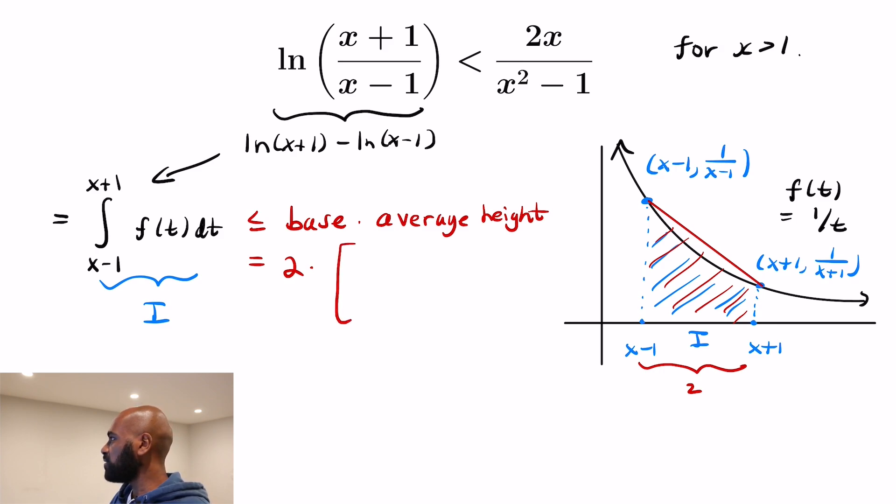And then the average height, so the higher point has height 1/(x-1). And the lower point has a value or height 1/(x+1). So the average is the difference over 2. And that gives you 1/(x-1) - 1/(x+1). Which, when we work the algebra out, gives us exactly what's on the right hand side: 2x/(x²-1).